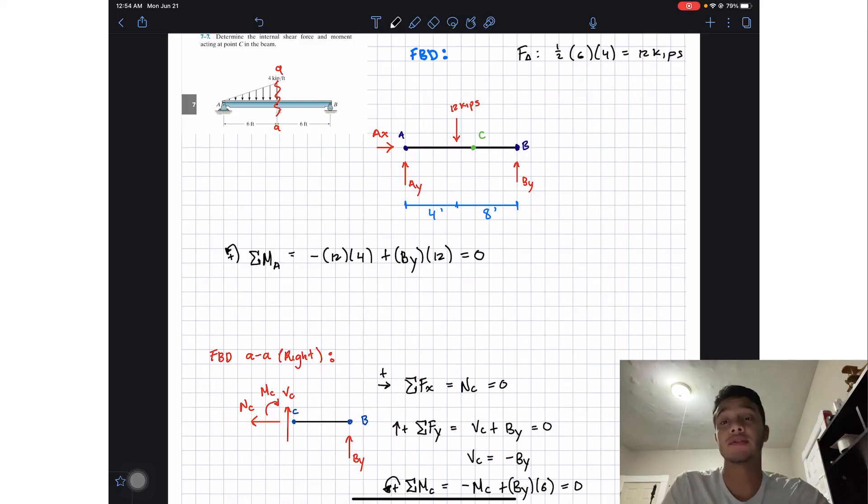I have nothing else creating a moment so we can cancel out 12 on 12. If we solve for By we will realize that By is equal to positive 4 kilopounds.